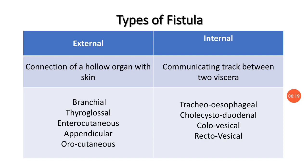Like sinuses, fistulas can also be divided into congenital and acquired categories. Congenital examples include preauricular, branchial, and tracheoesophageal types. Acquired fistulas result from trauma, surgery, or infection.